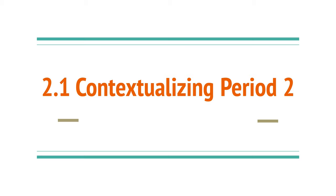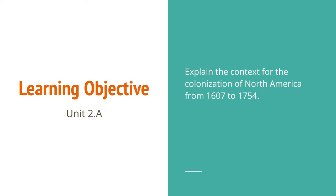Welcome back to another set of notes. We're starting with Historical Period 2. This set of notes is going to seem a little bit long because we've got to give you background on everything that happens in Period 2. The Learning Objective 2.A says: explain the context for the colonization of North America from 1607 to 1754. Those are the years which encompass all of Period 2.